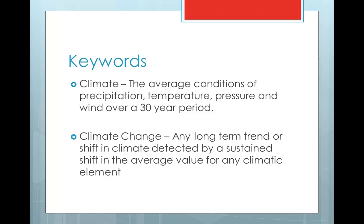The first thing you need to understand is the two key concepts. Number one: climate. This is the average conditions of precipitation, temperature, pressure, and wind over a 30-year period. Classically we think about temperature, but it can include precipitation, air pressure, and wind patterns, which are becoming more significant over time. Climate change is any long-term trend or shift in these conditions.